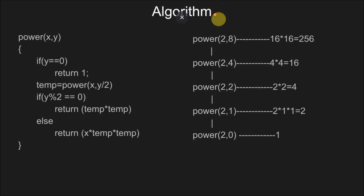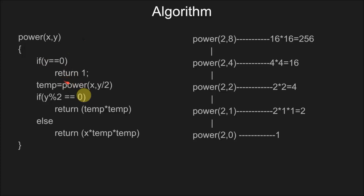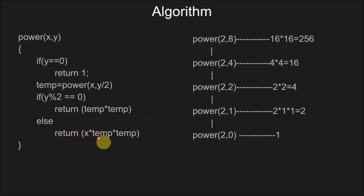The algorithm uses a function power with values x and y to calculate x to the power y. If y equals 0, we return 1, since anything to the power 0 is 1. We call the function power with x and y/2 and assign the return value to temp. Then we check: if y is even (y mod 2 == 0), we return temp * temp; otherwise we return x * temp * temp.